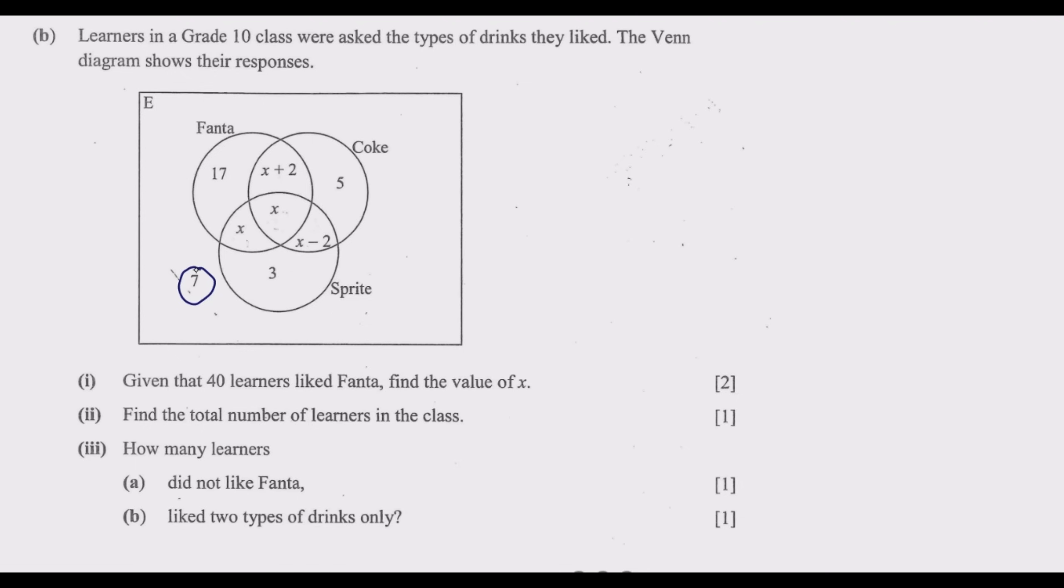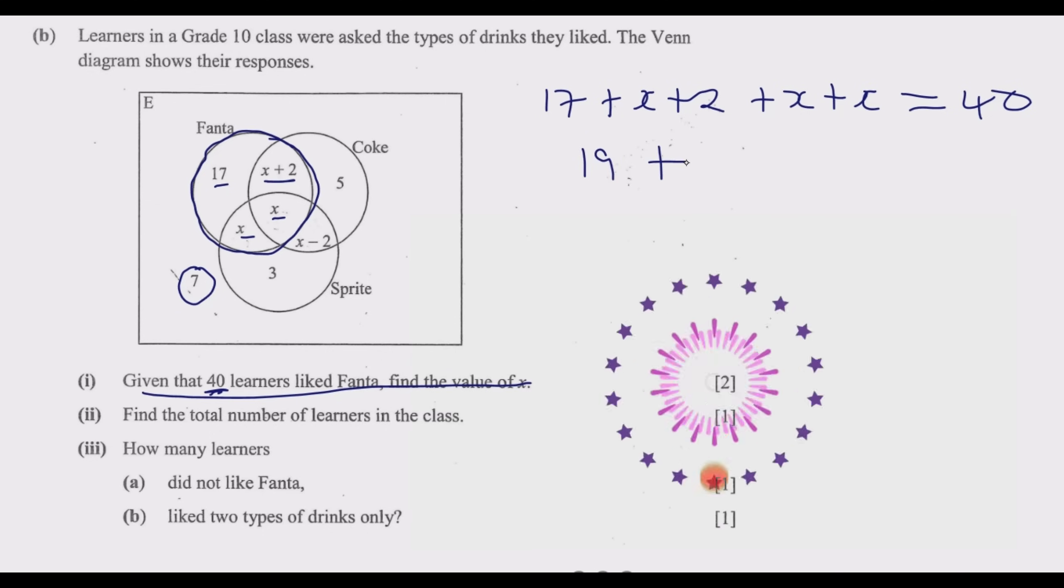Given that 40 learners liked Fanta, find the value of x. So what it means is we have 17 + x + 2, plus x + x. This must equal 40 because that's what is in the set Fanta. Then we add the like terms. So we have 19 + 3x.